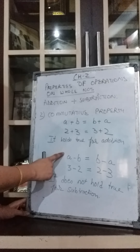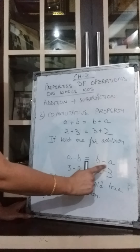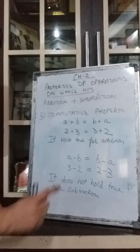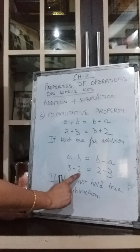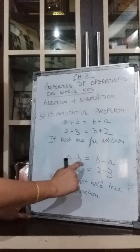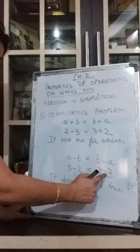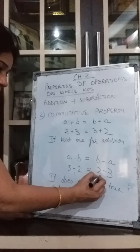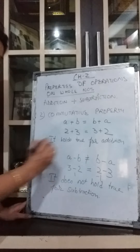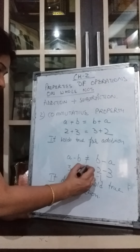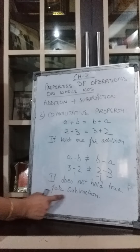Now let us see what happens in subtraction. According to commutative property, A minus B should equal B minus A. Take A as 3 and B as 2. 3 minus 2 gives 1. Now B minus A: 2 minus 3 gives minus 1. So A minus B is not equal to B minus A. This property does not hold true for subtraction.